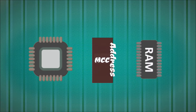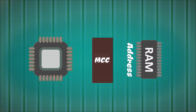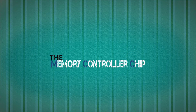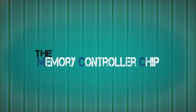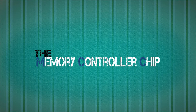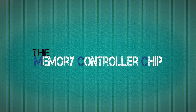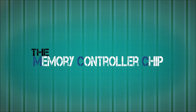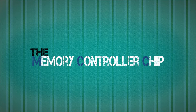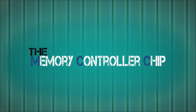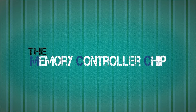A physical address is used by the CPU to access information stored within memory. Yet this process is not directly handled by the CPU, but instead is turned over to a secondary circuit called a memory controller, also known as the MCC.